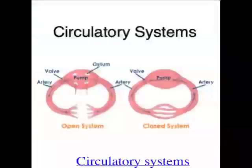Now, cells need things to live. They need to get nutrients and they need to get rid of wastes. If you're a really small organism, you can just get whatever you need from the environment, and if it's a waste, you can just get rid of it to the environment from your cells. So if you're small and you've got a really high surface area to volume ratio, you can just exchange materials directly with the environment.